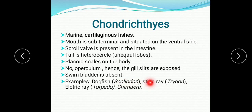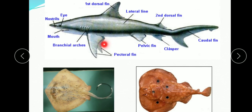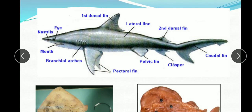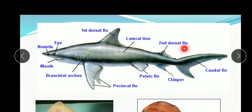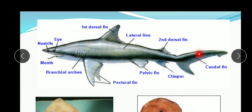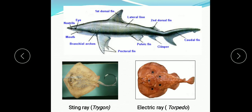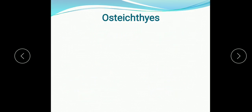Examples of Chondrichthyes are dogfish (Scoliodon), stingray (Trygon), electric ray (Torpedo), and Chimaera. You can see here the position of the mouth is on the ventral (subterminal) side, the lateral line, and all the fins: dorsal fin, pectoral fins, second dorsal fin, pelvic fin, claspers, and caudal fin. The tail is heterocercal — two unequal lobes in the caudal fin. Stingray (Trygon) and electric ray (Torpedo) are other examples of cartilaginous fish.